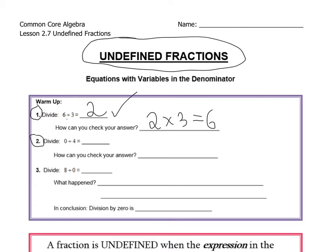In example 2, the same thing is true. 0 divided by 4 — well, 0 divided by anything is just 0. How can you check your answer? Take the product, multiply by the factor of 4. Do you get back to the other factor of 0? And sure enough, you do. 0 times 4 is 0. So 0 divided by 4 equals 0 can be checked and proven to be true.